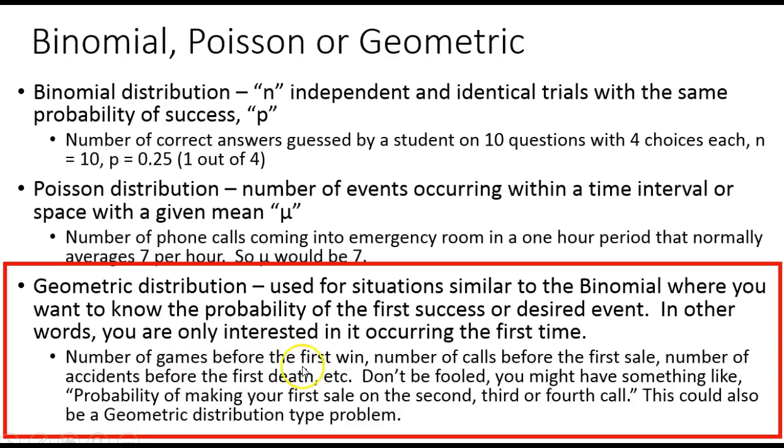Things like the number of games before the first win, number of calls before the first sale, number of accidents before the first death. Don't be fooled, you might have something like probability of making your first sale on the second, third, or fourth call. This could also be a geometric distribution type problem. As a matter of fact, the example I'm going to show you has something like this in it.